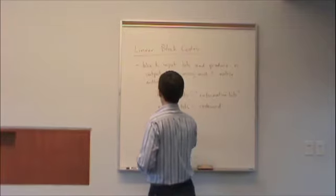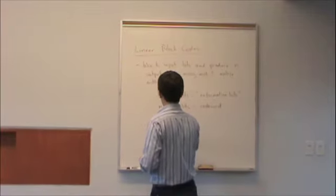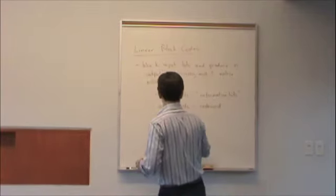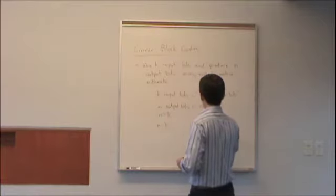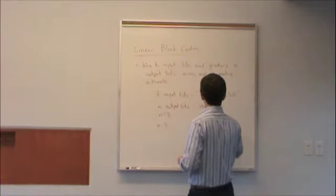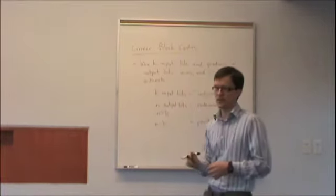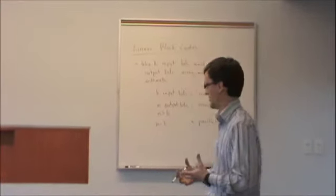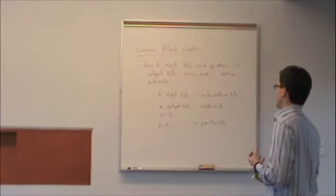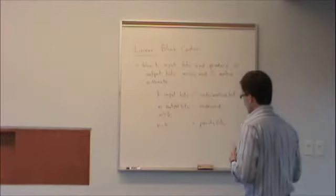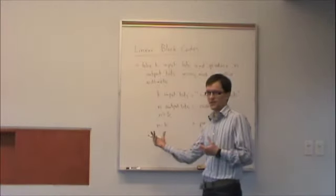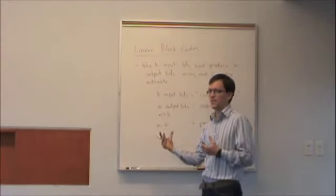Actually always, N is greater than K. And N minus K, the difference between those two, we call those parity bits. And the reason is, we're using mod 2 arithmetic to generate the code word, and therefore these N minus K bits are generated using mod 2 additions.